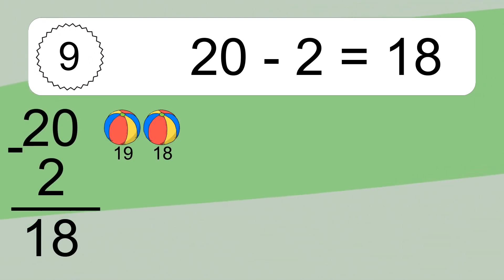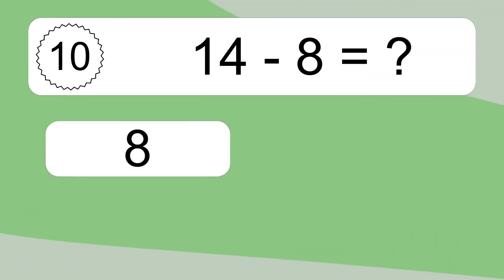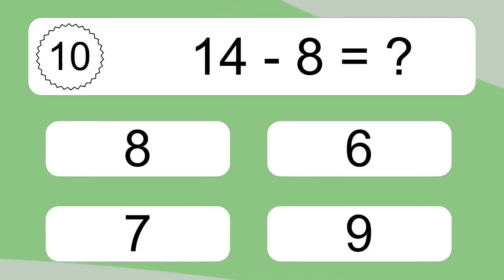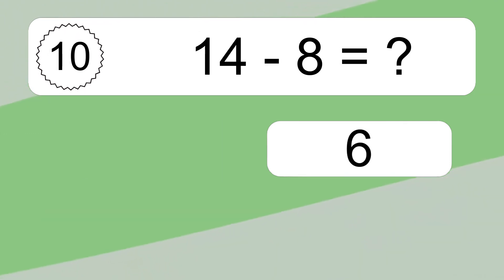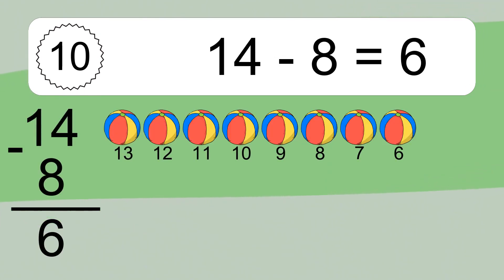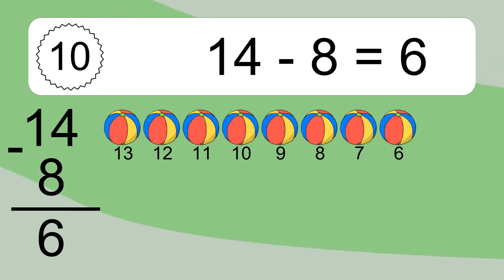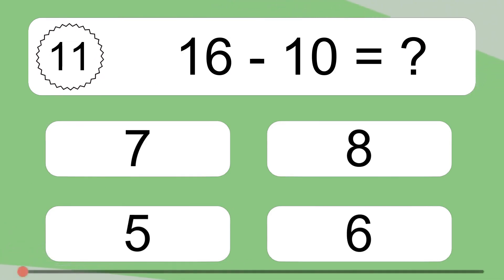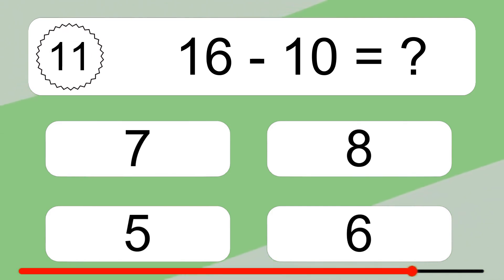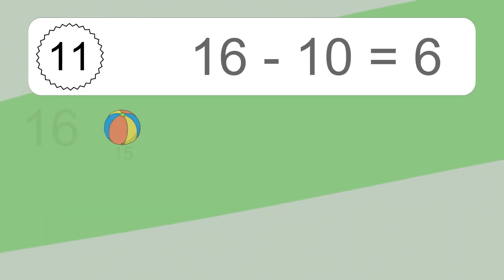20 minus 2 equals what? 20 minus 2 equals 18. Let's count it: 19, 18. 14 minus 8 equals what? 14 minus 8 equals 6. Let's count it: 13, 12, 11, 10, 9, 8, 7, 6.